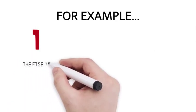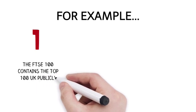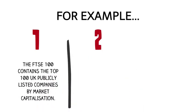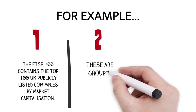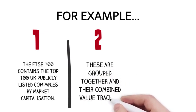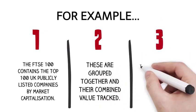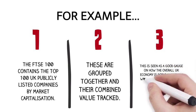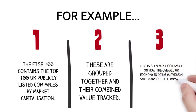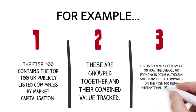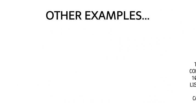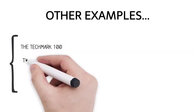For example, the FTSE 100 contains the top 100 UK publicly listed companies by market capitalization. These are grouped together and their combined value tracked. This is seen as a good gauge on how the overall UK economy is doing, although with many of the companies on the FTSE 100 being international, it is debated how accurate a measurement it actually offers.